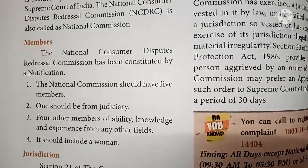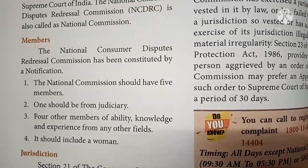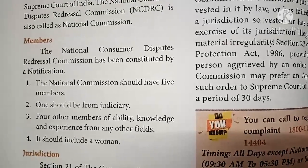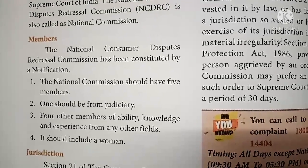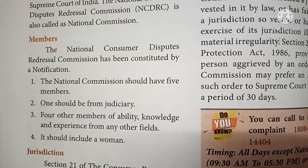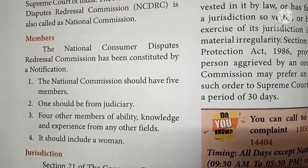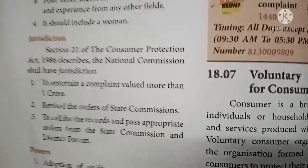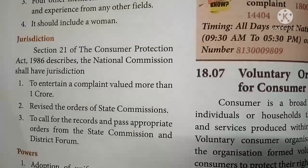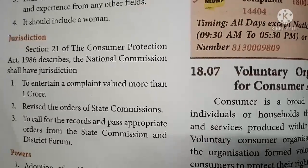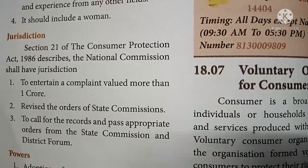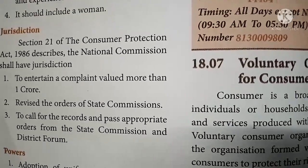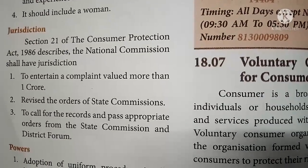The national commission should have five members: one from the judiciary as president, and four other members of ability, knowledge, and experience from other fields. Among the four members, one should be a woman member. Section 21 of the Consumer Protection Act 1986 states that the National Commission shall have jurisdiction to entertain complaints valued more than one crore.